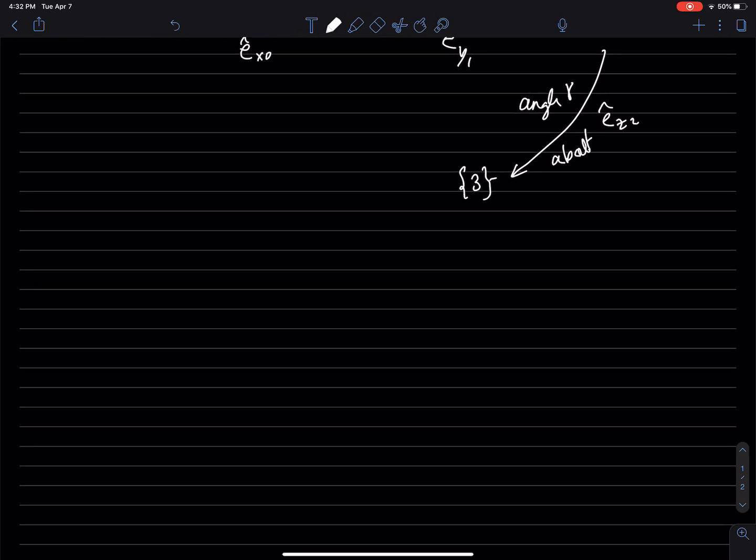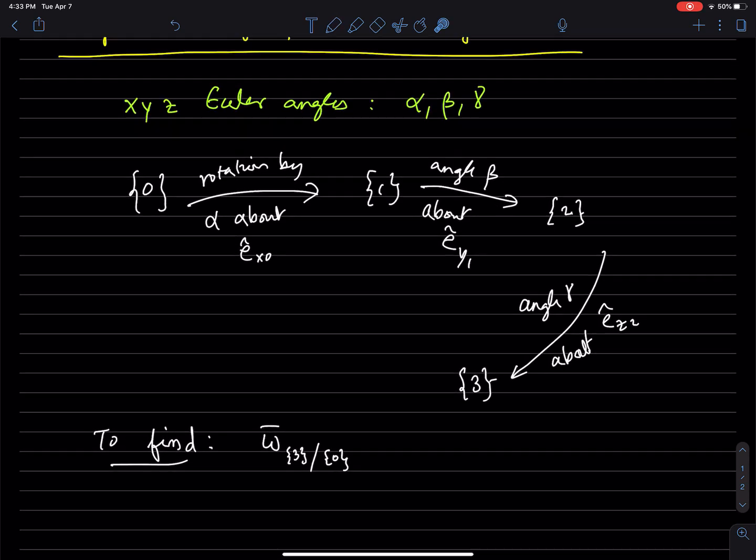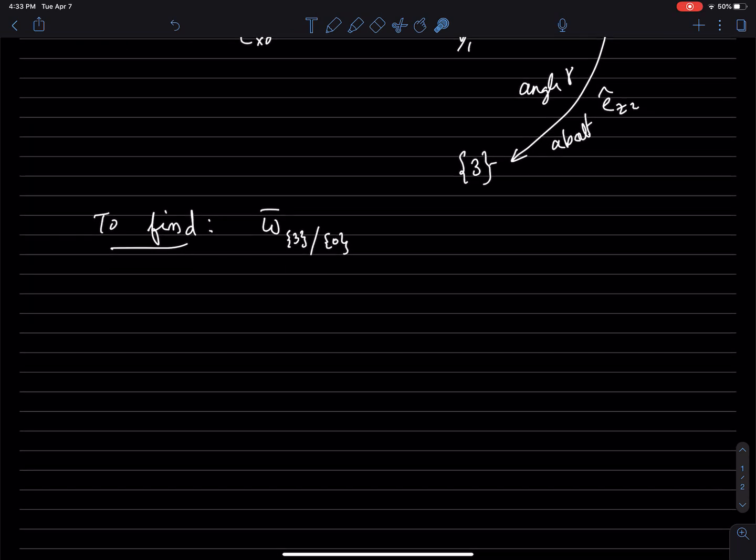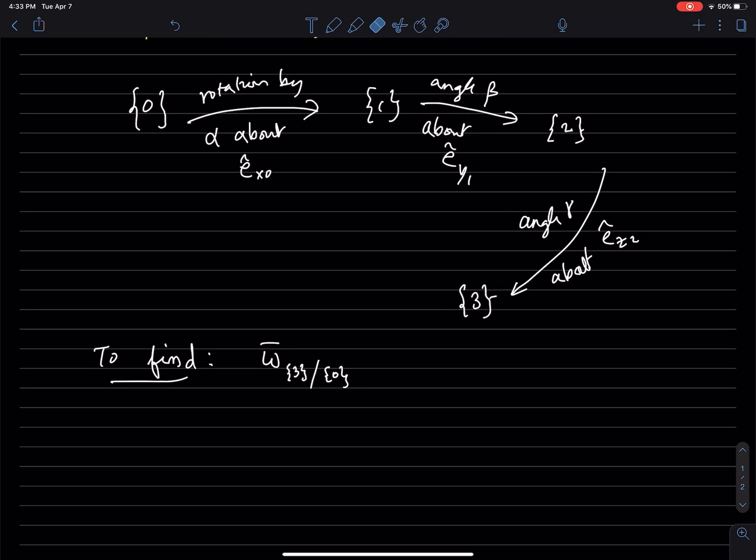And let's say we want to find angular velocity of frame 3 with respect to frame 0. And this is a common problem. Let's say the axis system 3 or frame 3 is attached to a rigid body, and you're representing its rotation via these transformations or sequence of transformations, namely Euler angles.